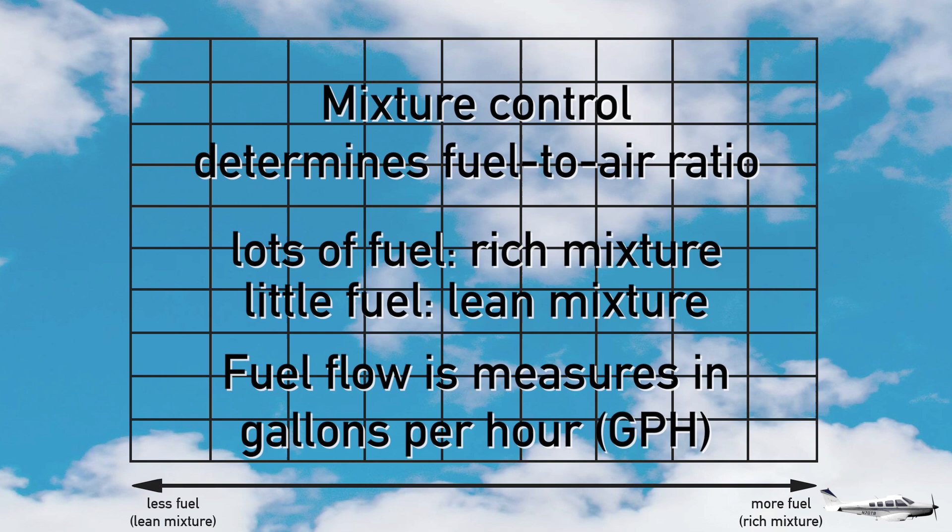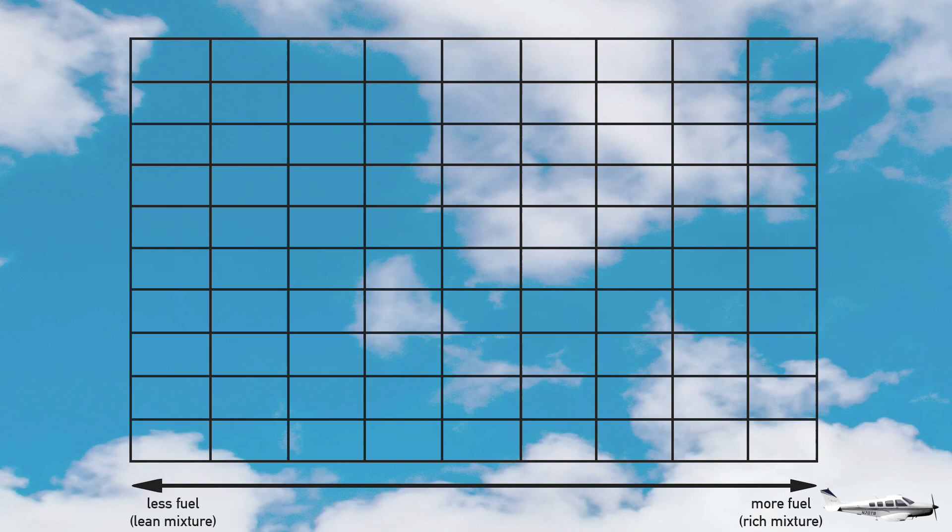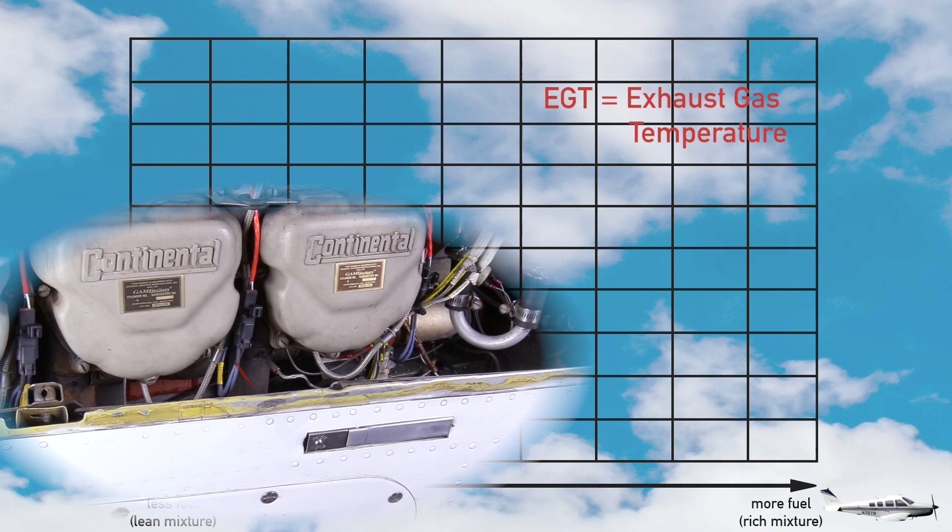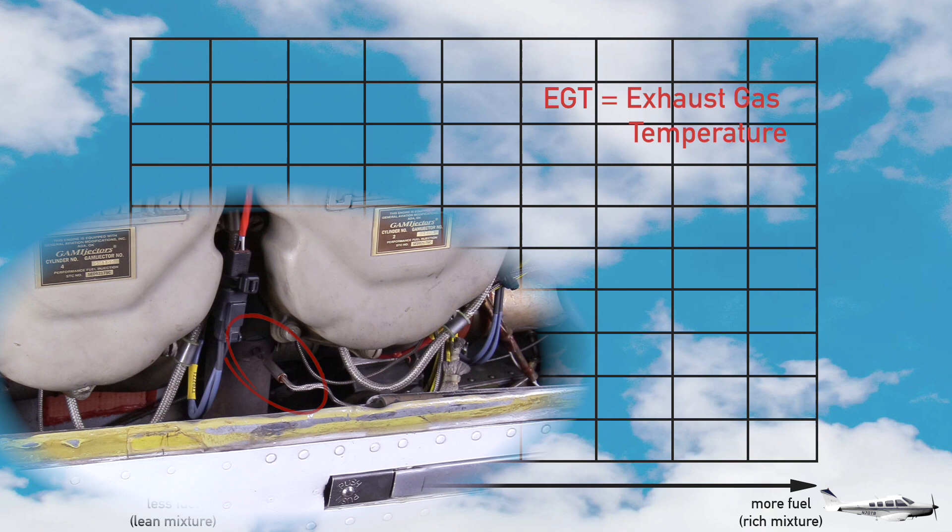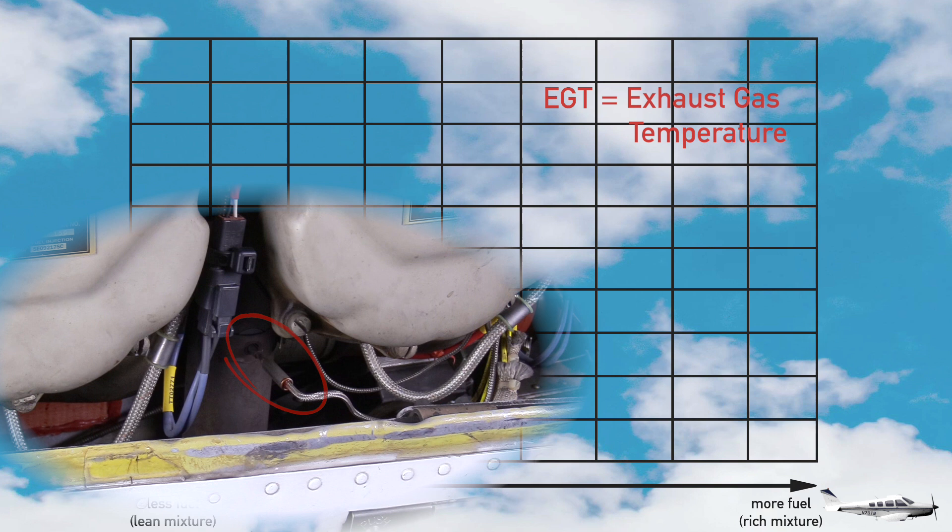One thing that changes as a result of our mixture or fuel flow setting, is the exhaust gas temperature, or short EGT. That's the temperature of the gas coming out of the cylinder after the combustion cycle. And we measure EGT with little temperature probes in the exhaust stack, such as this one here. There's a separate probe installed for each cylinder, so for my six cylinder engine, I'm dealing with six separate exhaust gas temperatures. For the moment though, let's just look at one cylinder, and one EGT, and ignore the rest.